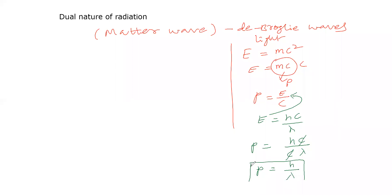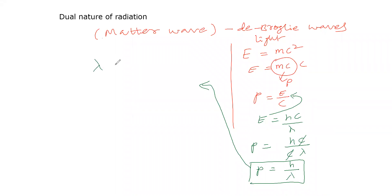So momentum is equal to Planck's constant divided by wavelength. Now looking at wavelength: the wavelength is equal to h divided by momentum — that is λ = h/p. This is why we look at de Broglie wavelength.